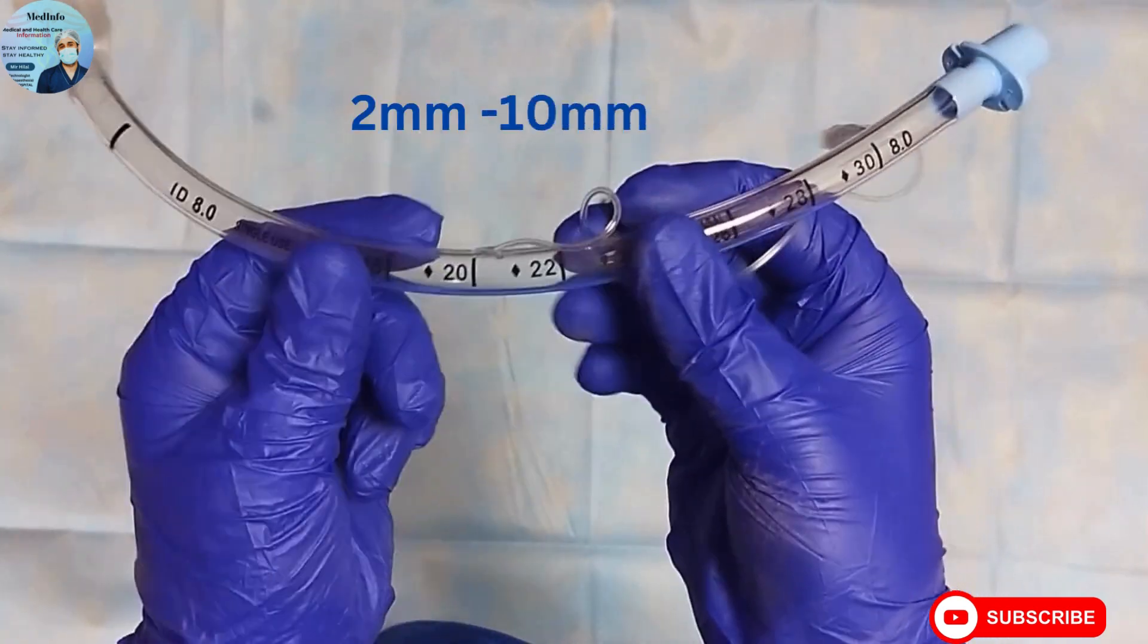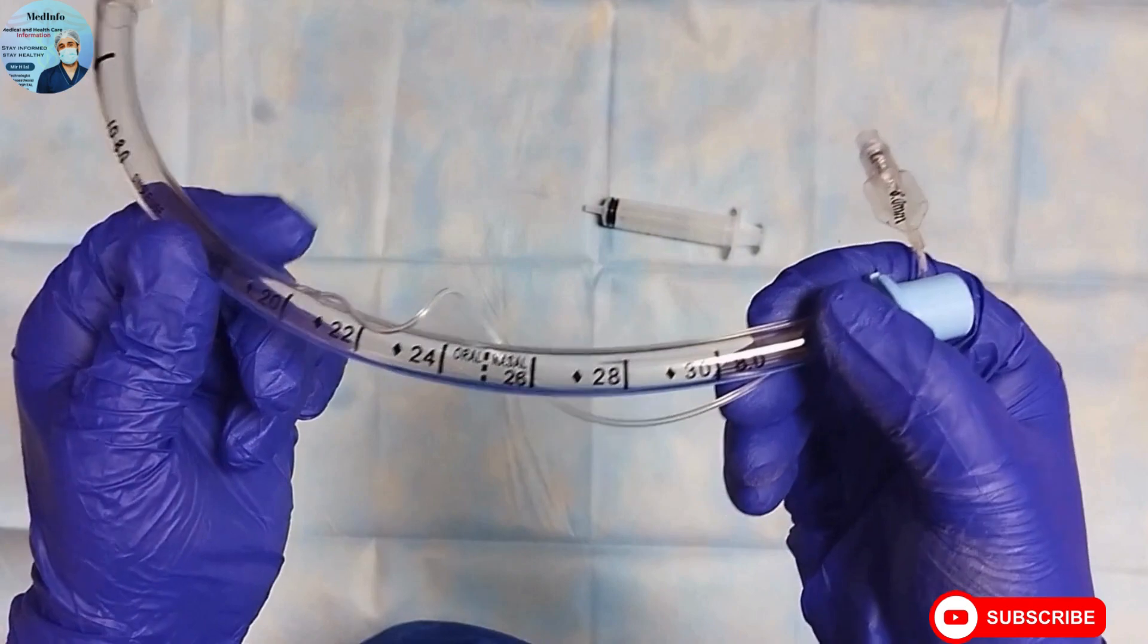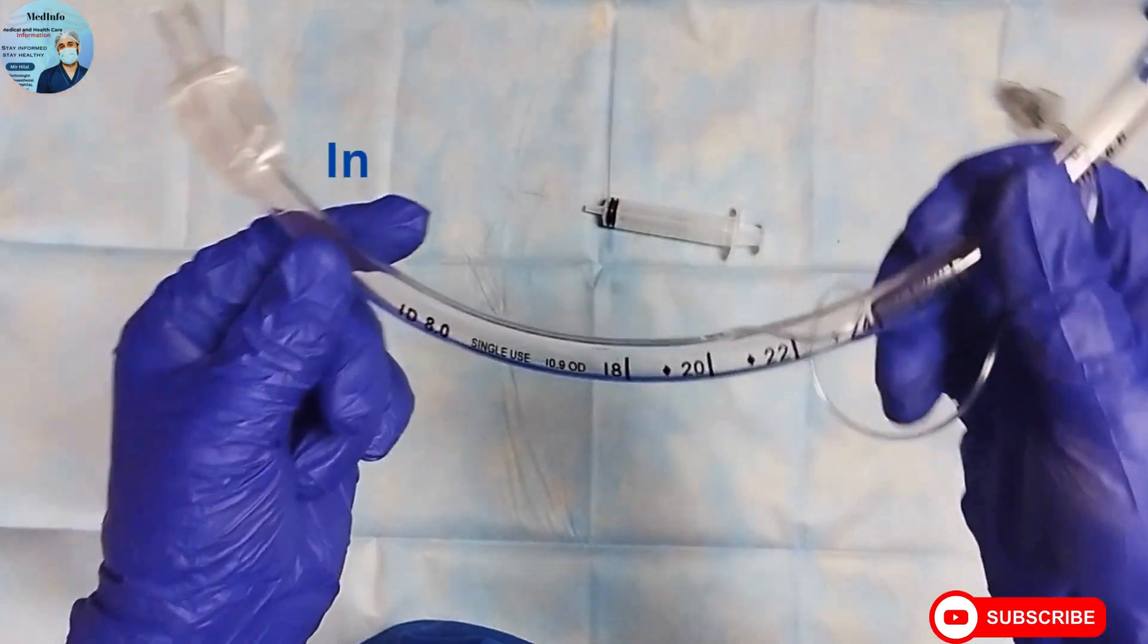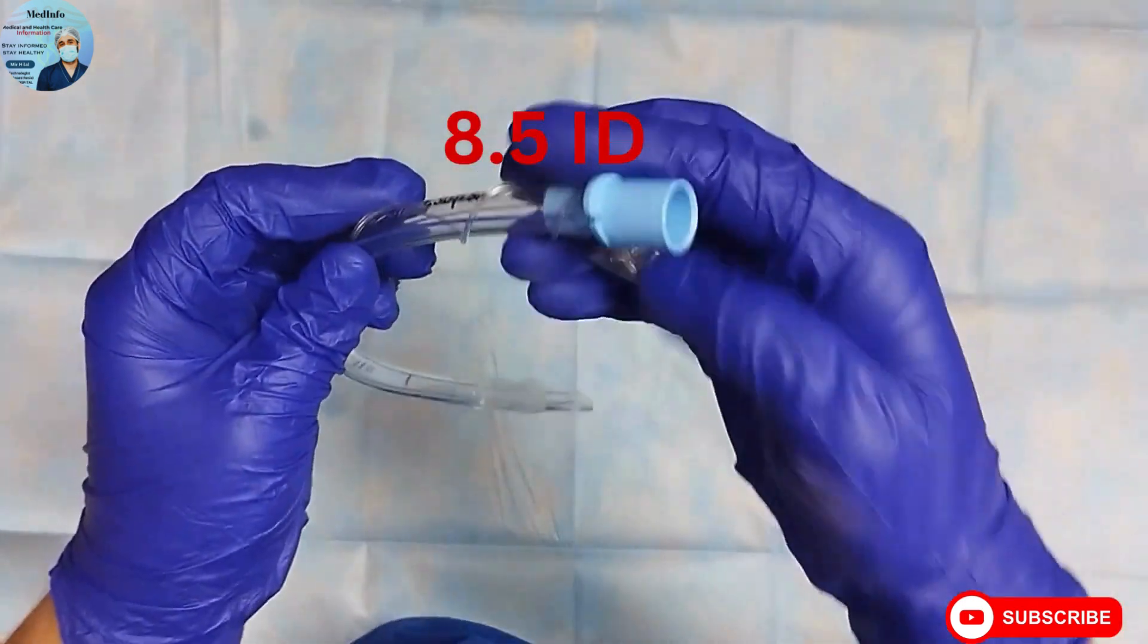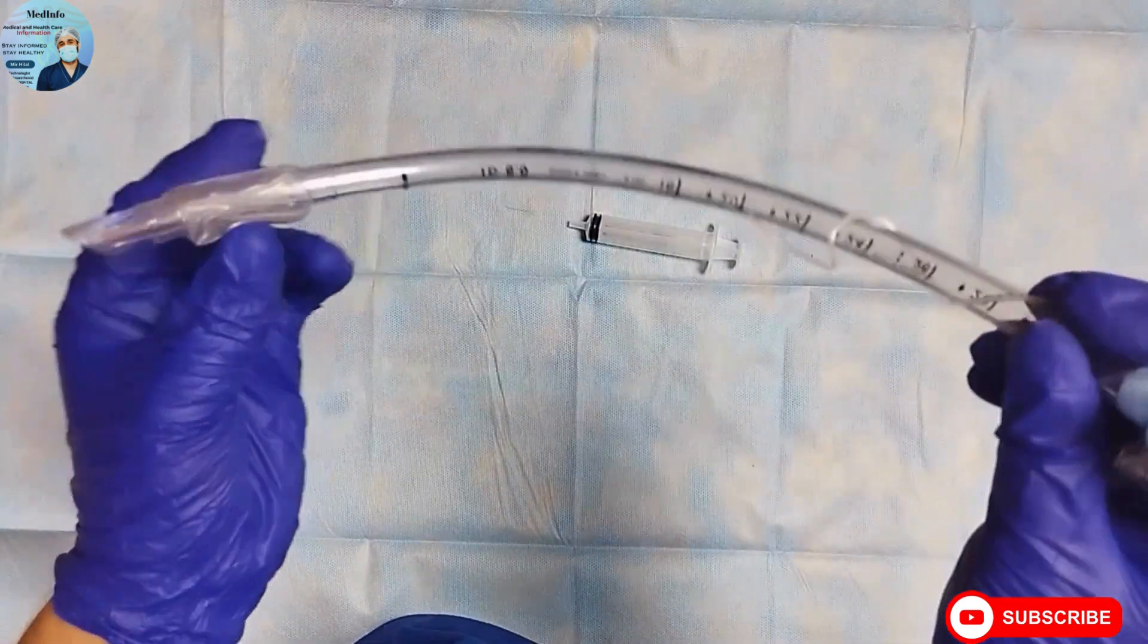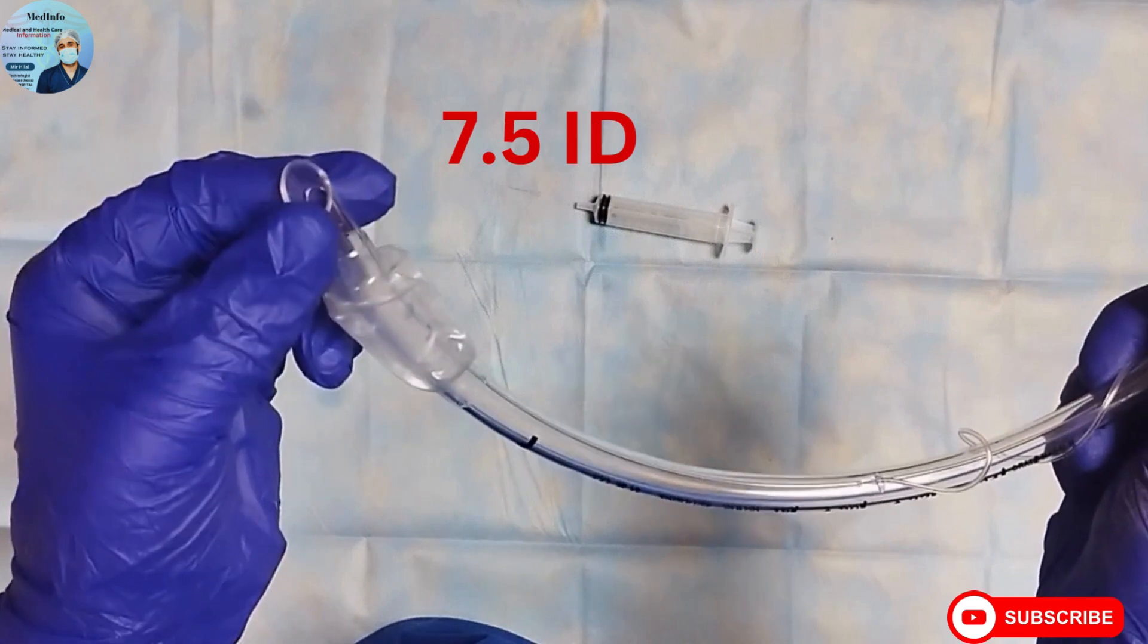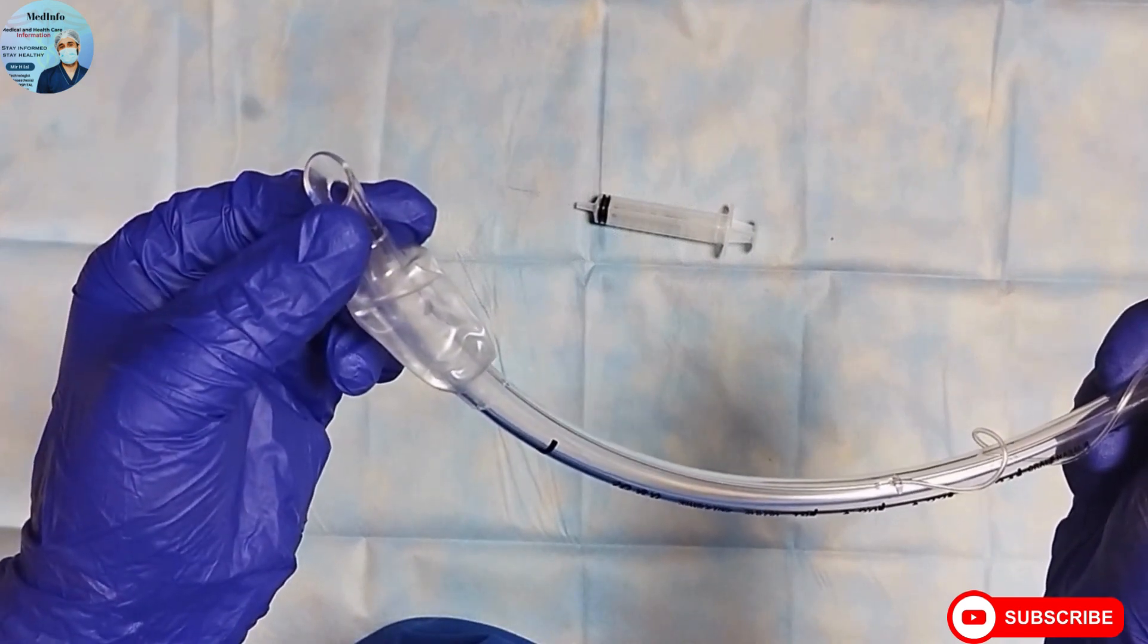ID here refers to the internal diameter. For a normal healthy male, we usually use 8.5 size endotracheal tube, and for a normal healthy female, 7.5 size endotracheal tube is used. For calculating the size of endotracheal tube in children, a formula is provided in the description of this video.